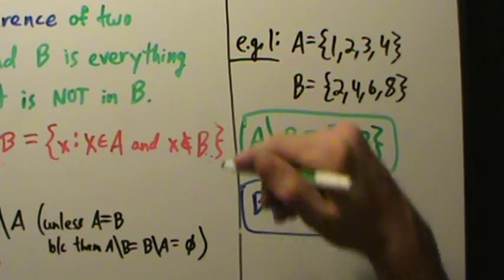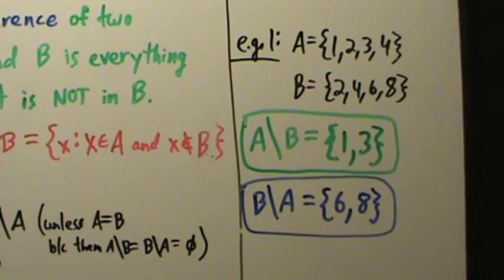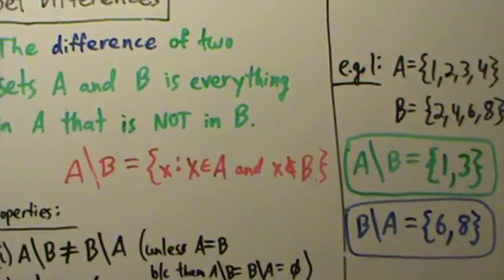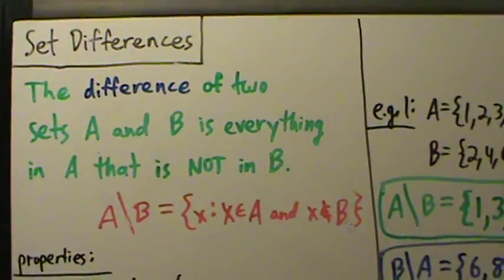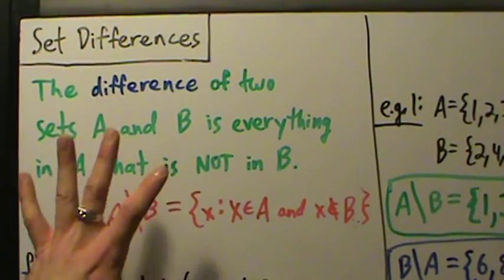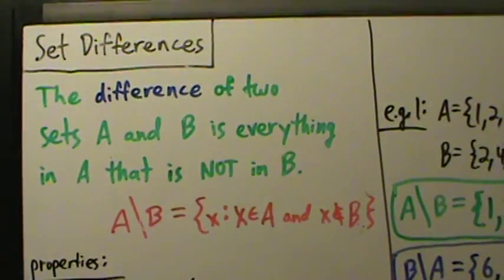So that's example one with set differences — not really too much different from unions and intersections, but worth talking about. That covers the definition and some properties of set differences.